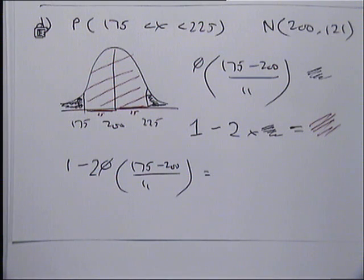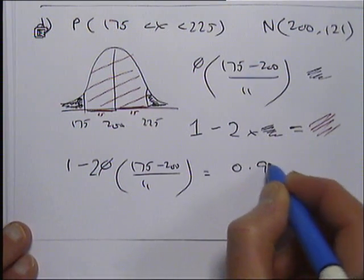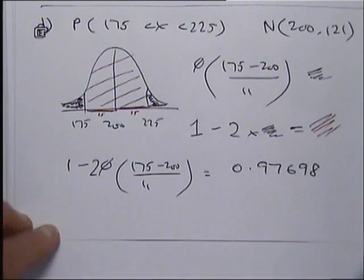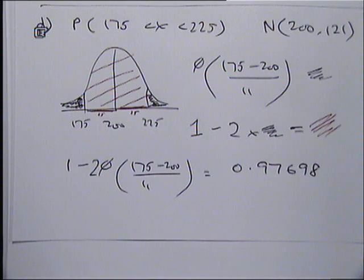The calculator gives 0.97698. I did it by doing phi of the 225 bit, take away a half times two. And with graphics calculators, there are all sorts of ways. When I did this originally, graphics calculators hadn't been done. I'm using notes from 1994 or 5 when I taught this first. So that's what you should be getting for that question, 0.97698. If you use tables, you'll get a slightly different answer. The answer I've got in my notes was 0.9768.